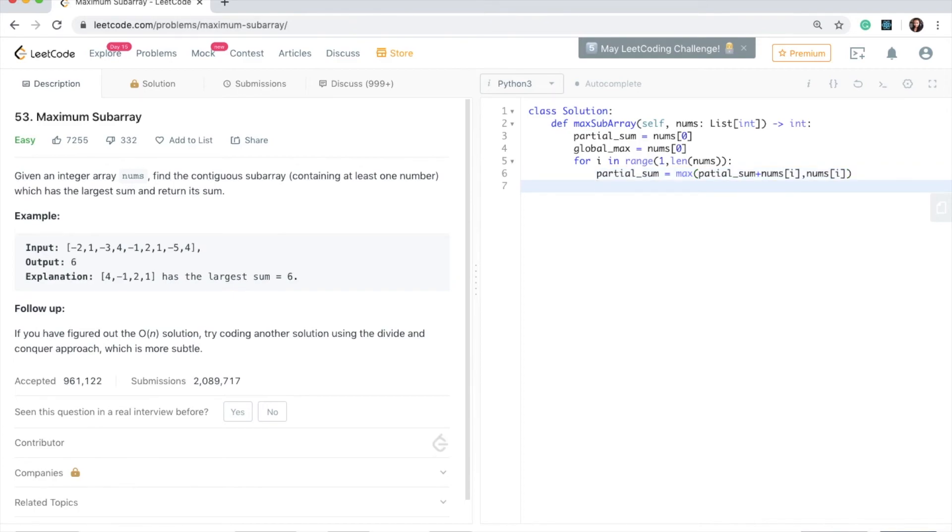And when that's done, we just need to find out what the global max is and just keep that variable. So we'll say global max equals, oops, I misspelled that, global max equals. And we'll just take the max of our previous global max and the partial sum.